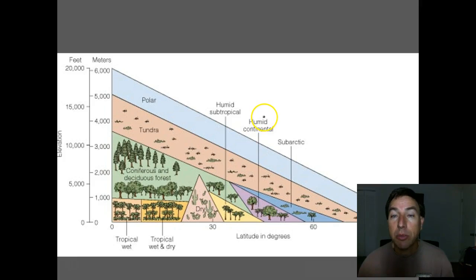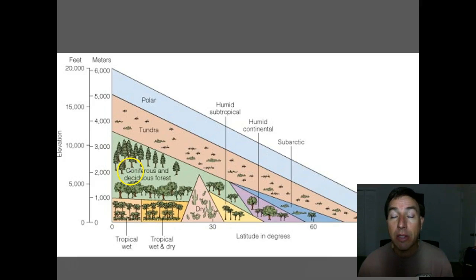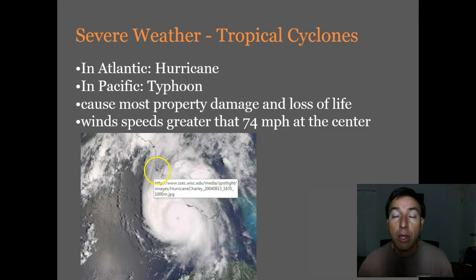Now, what's the connection between weather and biology? As discussed previously, the weather or climate in an area controls the types of plants found there, and then those plants bring in the types of animals you see. Let's look at some severe weather.